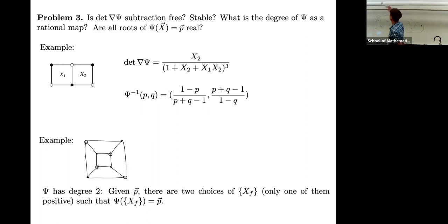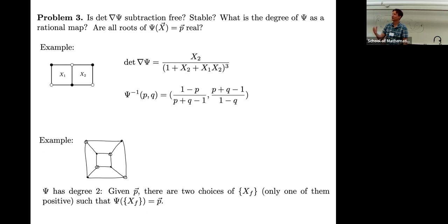Frank points out that the fact that there are two pre-images means it's a two-to-one map, and there's an algebraic variety in the middle. The question is: can we say topologically what this map is doing and whether there's some intermediate algebraic variety? There is one.